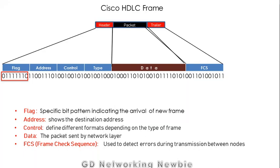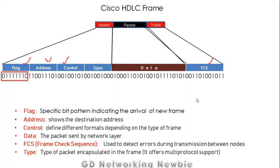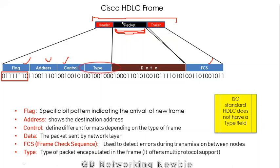Cisco has a proprietary HDLC frame that includes all the fields defined by ISO — the flag, address, control, and FCS fields — but adds one additional field called the type field. The type field defines the type of the network layer packet encapsulated in the frame, indicating which network layer protocol provided the data. This type field is a Cisco addition; the ISO standard HDLC frame does not have a type field, but Cisco's version does.